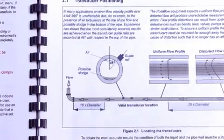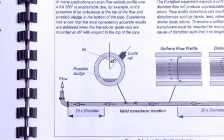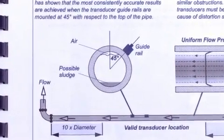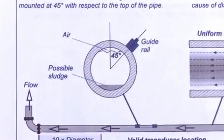On horizontal pipe applications, take care not to attach the guide rail or sensors on the top or bottom of the pipe, in case of air being trapped at the top or sediment at the bottom of the pipe.